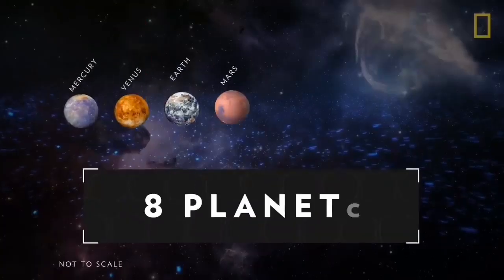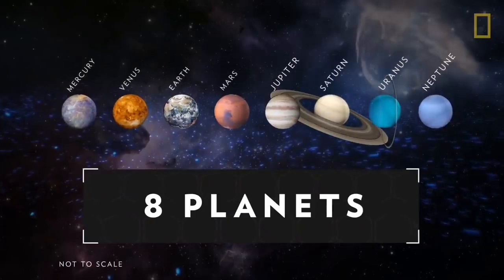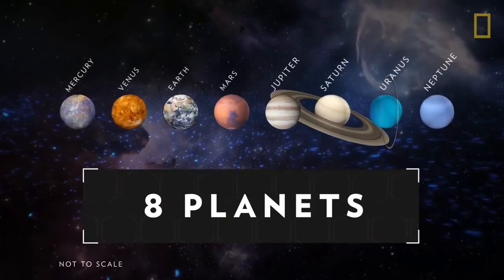So, in conclusion, there are eight planets, which are Mercury, Venus, Earth, Mars, Jupiter, Saturn, Uranus, and Neptune.